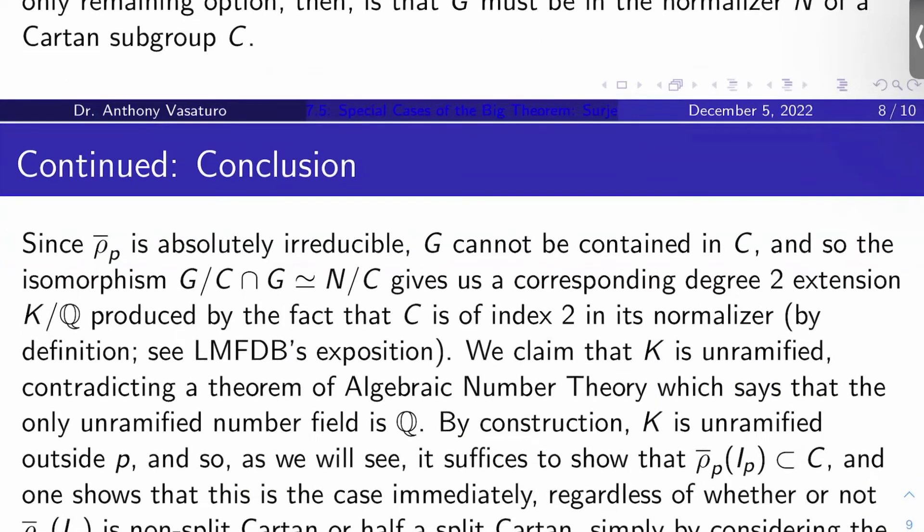But I'm going to show you that that can't happen either. So let's call the normalizer N and the Cartan subgroup C. If rho bar P is absolutely irreducible, which it is, its image can't be contained in a Cartan because that would make the representation reducible. Well, look. You have G is in N. You have C is in N. But you have G isn't in C. So you have to have an isomorphism G mod C intersect G with N mod C. But by definition, N mod C is order 2. The normalizer of a Cartan, by definition, has index 2 in its normalizer.